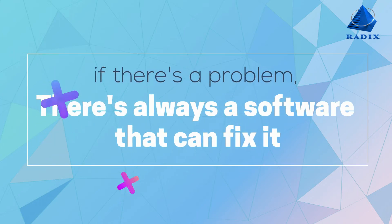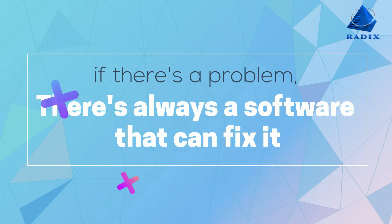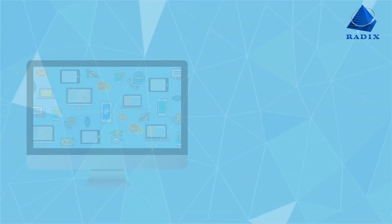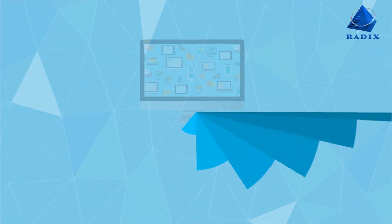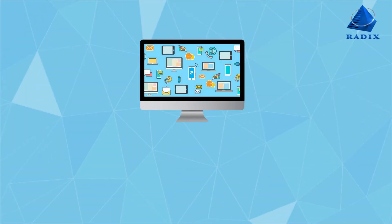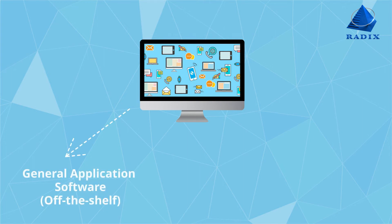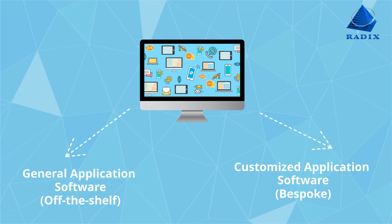Today we have a plethora of high-end technology and software at our disposal that define how we live our lives and accommodate our ever-changing and expanding requirements. Let us touch upon the types of software applications. Application software consists of two major categories: the first is general application software, and the second is customized application software.